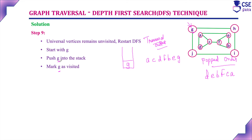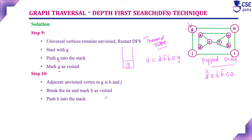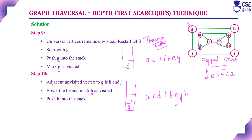Currently visited vertex is G. Consider adjacent unvisited vertices to G — that are H and J, both unvisited. Break the tie by alphabetical order — H comes first. Mark H as visited and push it into the stack. Traversal output is A, C, D, F, B, E, G, H. The popped order remains the same; no vertex has been popped yet.